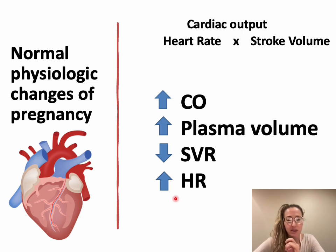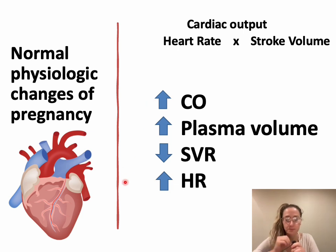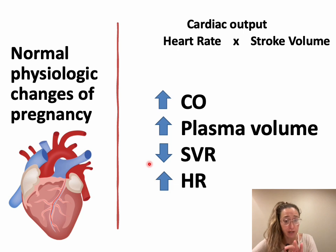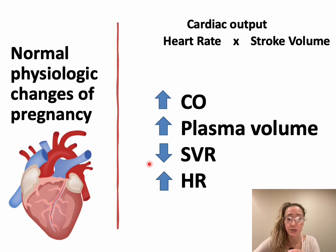The heart rate of a pregnant patient increases from baseline about 10 beats per minute, which plays into the increased cardiac output. Systemic vascular resistance is decreased — this is progesterone-mediated smooth muscle relaxation. In pregnancy, vascular plasticity accommodates a larger blood volume, allowing for this decrease in stroke volume, along with an increase in plasma volume.